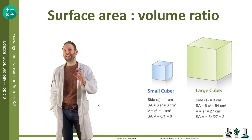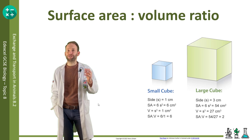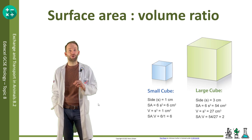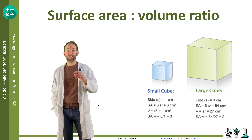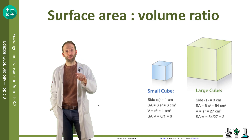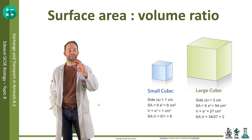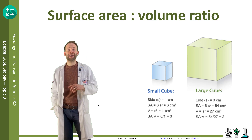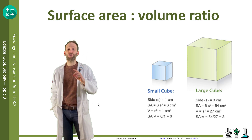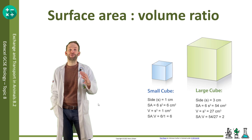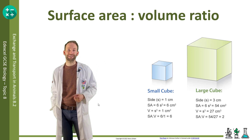These cubes here represent organisms of different sizes. The small cube, representing a small organism, has a surface area of six — its sides are one by one centimetre, so one side has a surface area of one, and with six sides that gives six total. The volume is one times one times one, which is one. So the surface area to volume ratio is six divided by one, which is six.